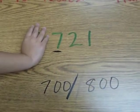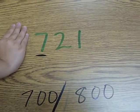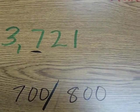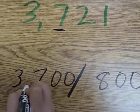Now, it really is a four-digit number. So what two hundreds is it between? 3,700 and 3,800.